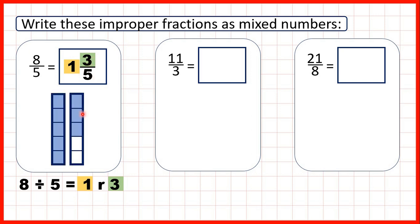Here we can see 8 fifths. We have fraction bars split into 5 pieces, so each piece is 1 fifth and we have 8 of them. When we change it back into a mixed number, we make 1 whole — so now we have 1 whole and 3 fifths rather than 5 fifths split up.